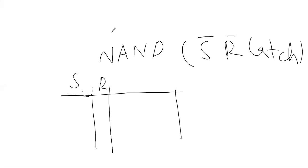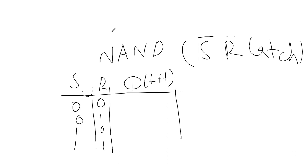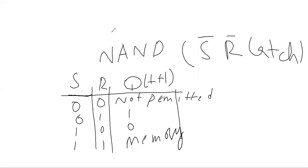This is S and this is R. So the truth table: when S and R are both 0, Q of t plus 1 is the next state — not permitted for 1,1. When S is 0 and R is 1, Q is 0 — reset state, 0 will be stored. When S is 1 and R is 0, Q is 1 — set, 1 will be stored. When S is 1 and R is 1, it is the memory state — restoring past output Q of t.